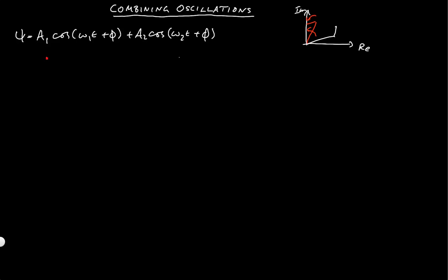In this screencast I'm interested in two special cases. The first special case is when A1 and A2 are not the same — they're different — the phases phi1 and phi2 are not the same, but omega1 is equal to omega2.